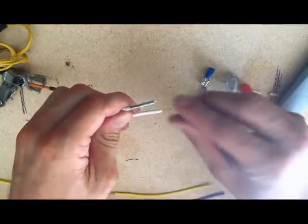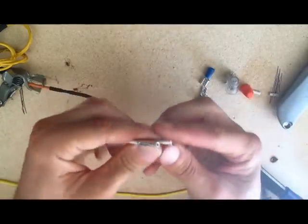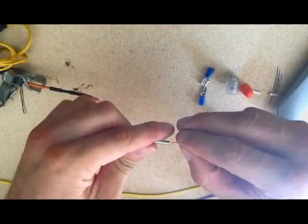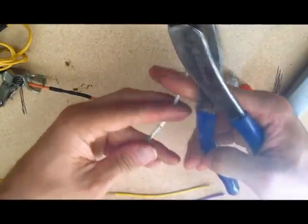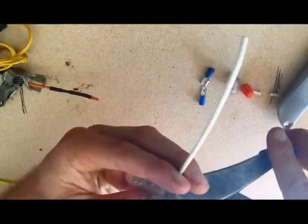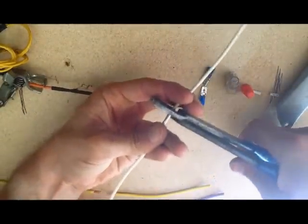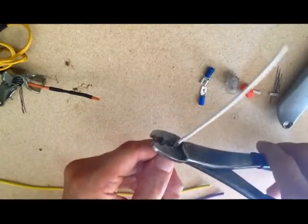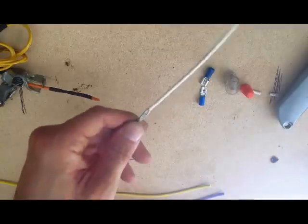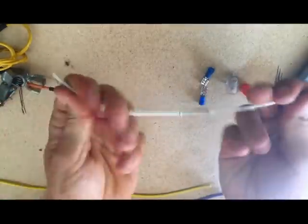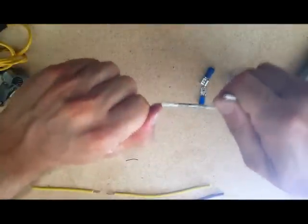So then we just do the same to the other side. Slide him in there. And then I normally hold it with both hands just to make sure it's all the way home. And then just crimp. And same again. Two little crimps. So it's crimped all the way along the wire. Pull those off. And then we've got a good join. Literally can't pull that apart.